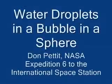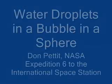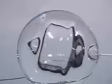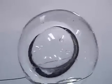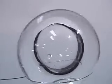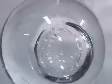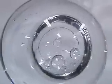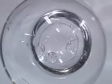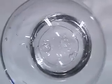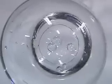Water droplets in a bubble in a sphere. Here we have a sphere of water 75 millimeters in diameter with an air bubble inside about 35 millimeters in diameter, and we inject water droplets anywhere from one to eight millimeters in diameter into the bubble.